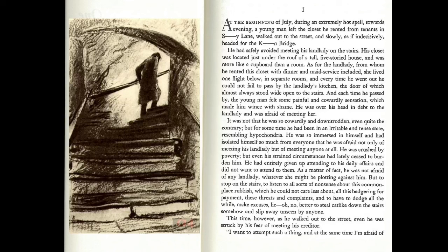Here is the beginning: "At the beginning of July, during an extremely hot spell, towards evening, a young man left the closet he rented from tenants in the blurry lane, walked out to the street, and slowly, as if indecisively, headed for Kay Bridge. He had safely avoided meeting his landlady. His closet was located just under the roof of a tall five-story house. Every time he went out, he could not fail to pass by her kitchen door, which was always open. Each time he passed by, he felt some painful, cowardly sensation, which made him wince with shame." Up to the end of this first paragraph, there's no particular deviation from the third-person narrator.